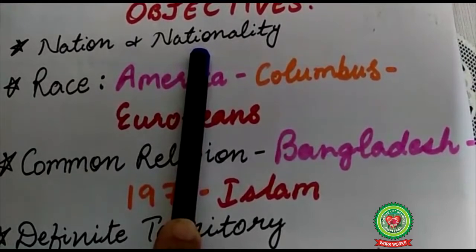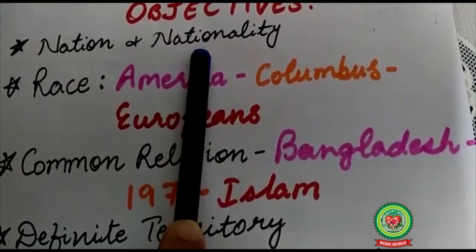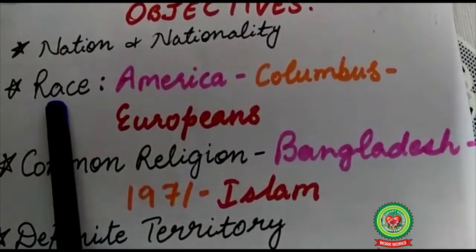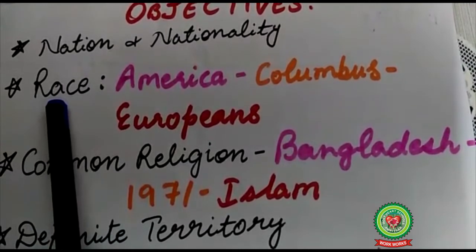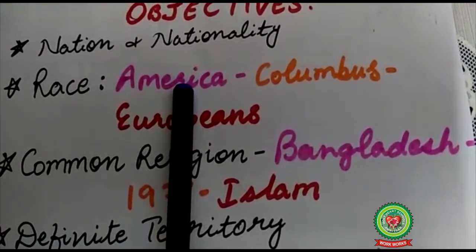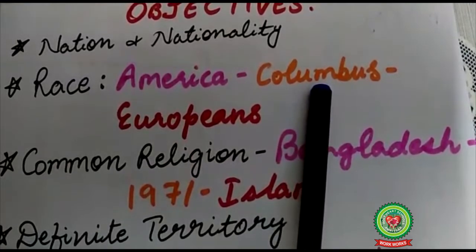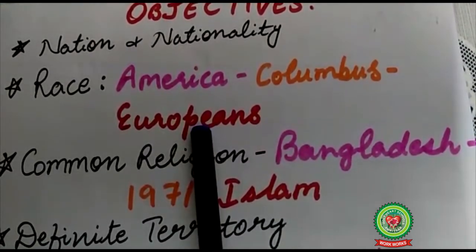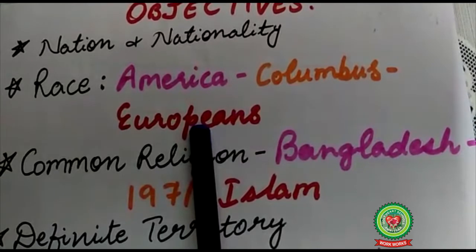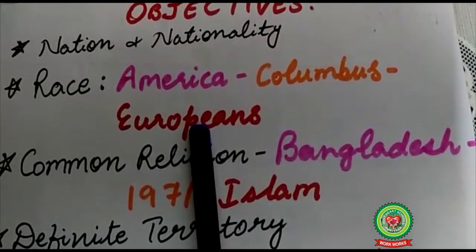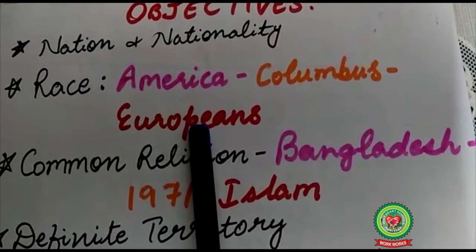Nation means a group of people bound by ties like common history, language, culture, and origin. In contemporary times we can't accept race as a base of nation. Take the case of America — Columbus discovered America, and later it was occupied by many Europeans who settled there and made it their homeland. Now they are all called Americans.